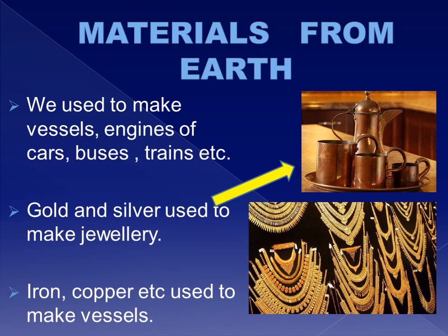Machines, electrical items, wires, and many other things are also made from metals. Iron, aluminum, and copper are some common metals used to make materials. Gold and silver are metals used to make jewellery. We get all metals from the earth.